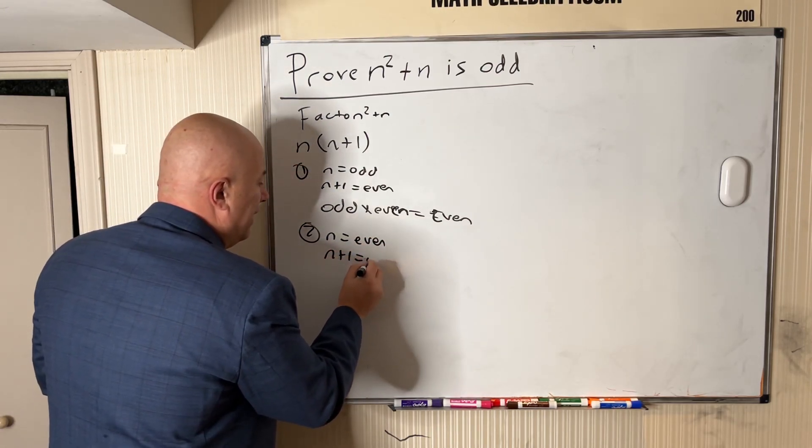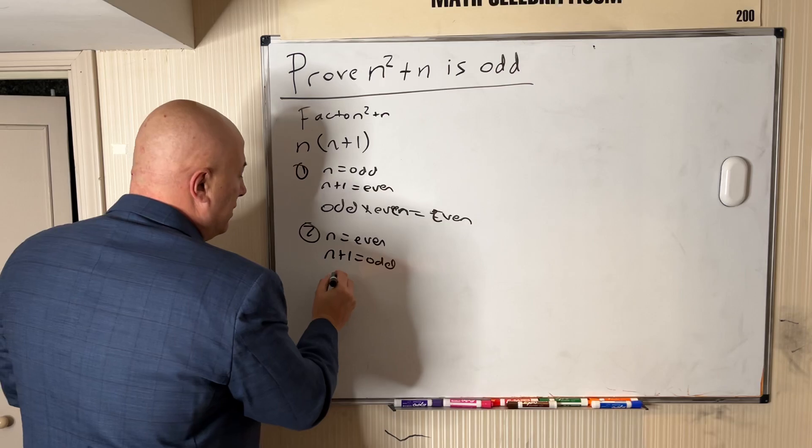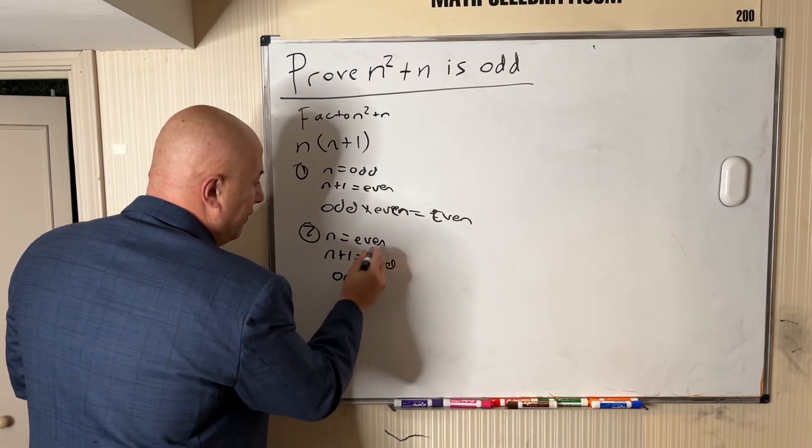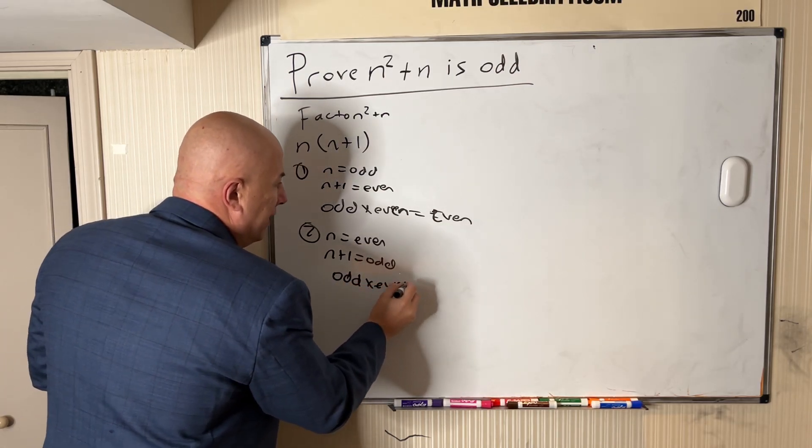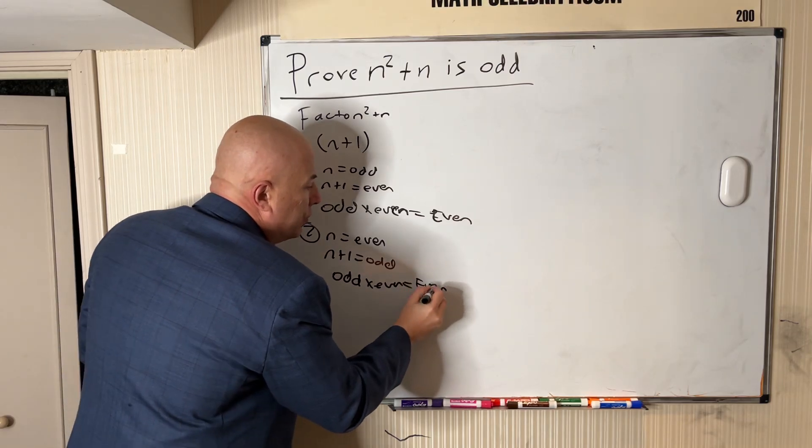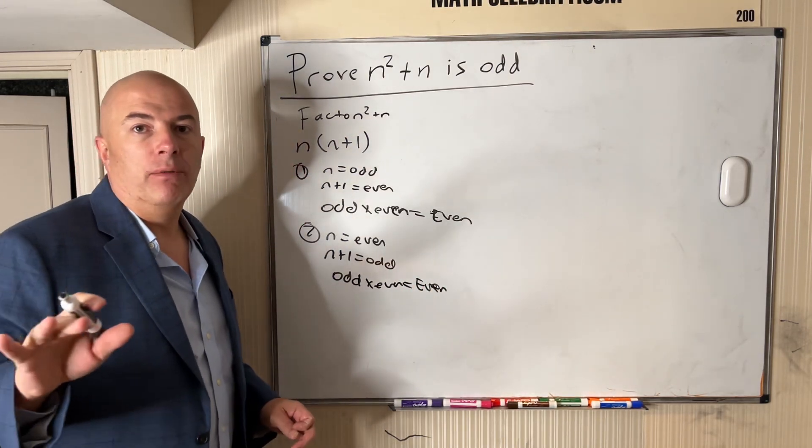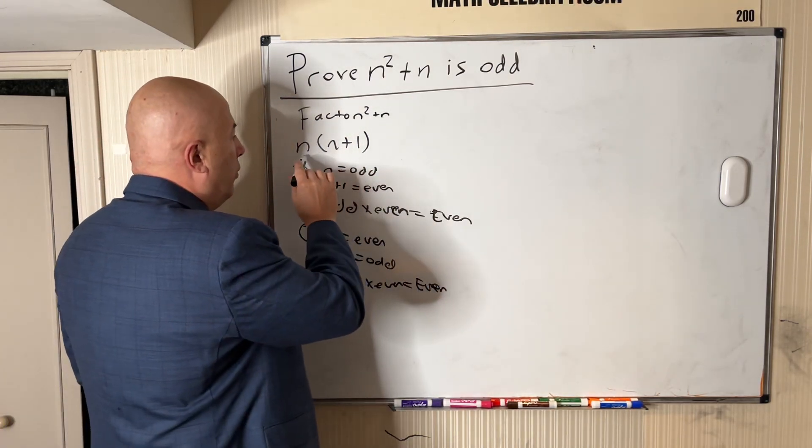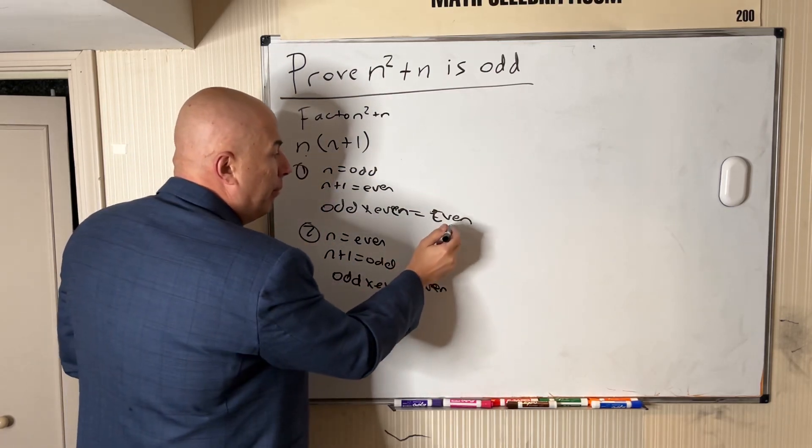Well, if n is even, n plus one then is odd, and the product of an odd times an even or even times an odd is even. So through the exhaustive scenario methodology, no matter if n is even or n is odd, the product is always even.